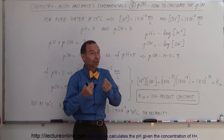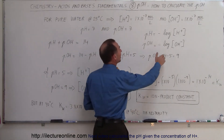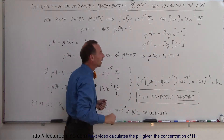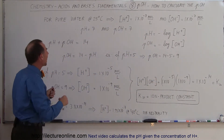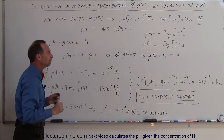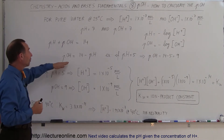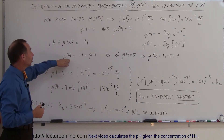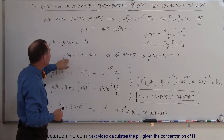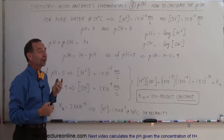Since both concentrations are 1×10⁻⁷ moles per liter, the pH and pOH are both equal to 7. When we add pH and pOH together, we get 14. That means if we know the pH, we can calculate the pOH by simply subtracting the pH from 14 to get the pOH.